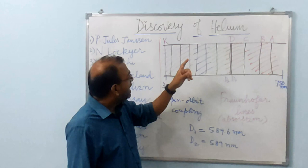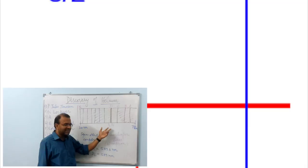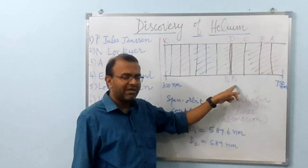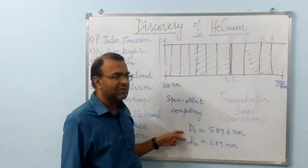From the labeling of Fraunhofer, the D line was later found to be split due to spin-orbit coupling into two lines, namely D2 and D1, the higher wavelength being D1. The D1 value is 589.6 nm and the D2 wavelength is 589 nm. So later this was found to be belonging to the element sodium.